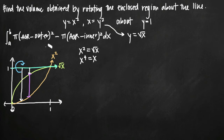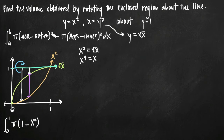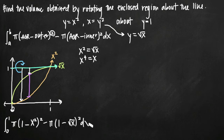Plugging in values: the integral from 0 to 1, times pi, of (1 minus x squared) squared minus pi times (1 minus square root of x) squared, dx. Our limits of integration are 0 and 1, the axis of rotation is 1, the outer curve is x squared, and the inner curve is square root of x. Once plugged in, it's just a matter of simplifying and evaluating.